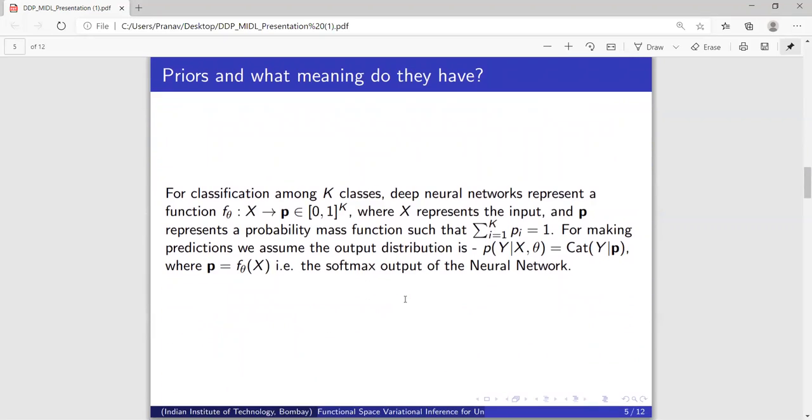So how do we look at modern day neural networks, especially in the case of classification? So for a k-class classification task, we view a neural network as a function from the input space to a point on the k-1 dimensional simplex. Now if you want to make a prediction of the output distribution, it is usually assumed to be a categorical random variable conditioned on the softmax output.